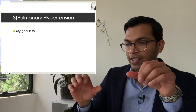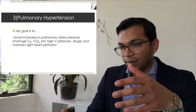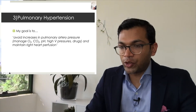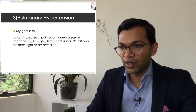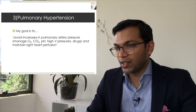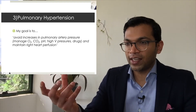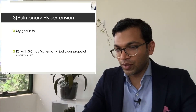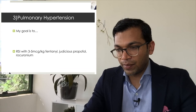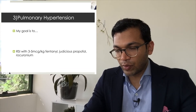I think of two things: right heart function and pulmonary vascular afterload. I'd avoid increasing pulmonary pressure with those triggers, keep ventilation pressures low, and maintain right heart perfusion. If the right heart is bad, this becomes like a critical cardiac induction for the right heart, plus management of pulmonary pressures — and it would look very similar to the critical cardiac induction in many cases.